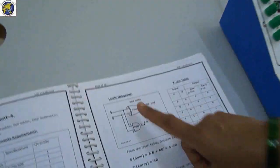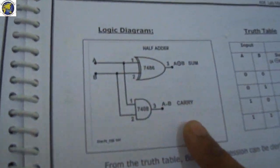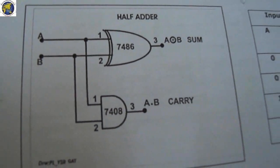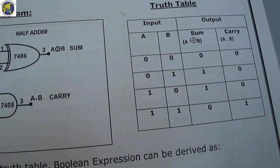This is the logic diagram of the half-adder circuit, and this is the truth table.